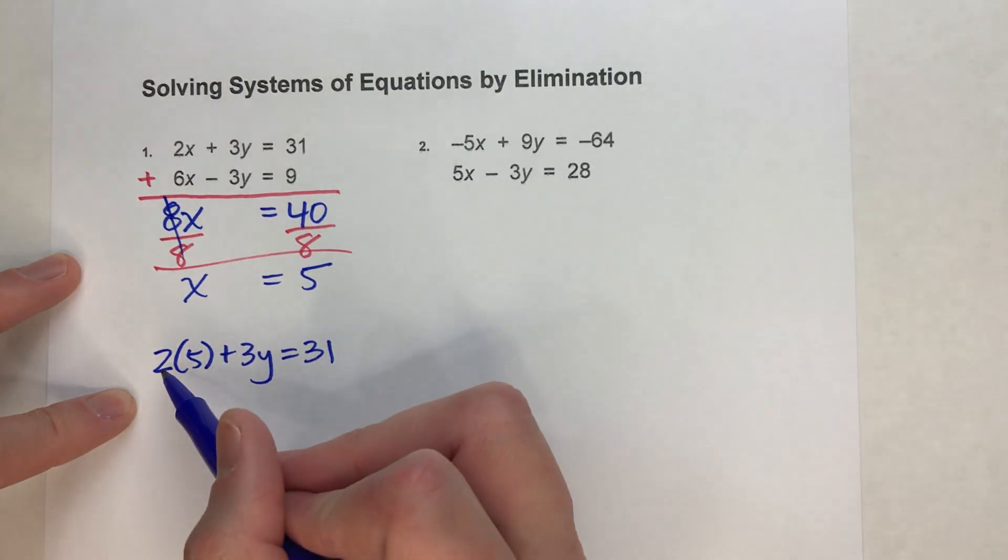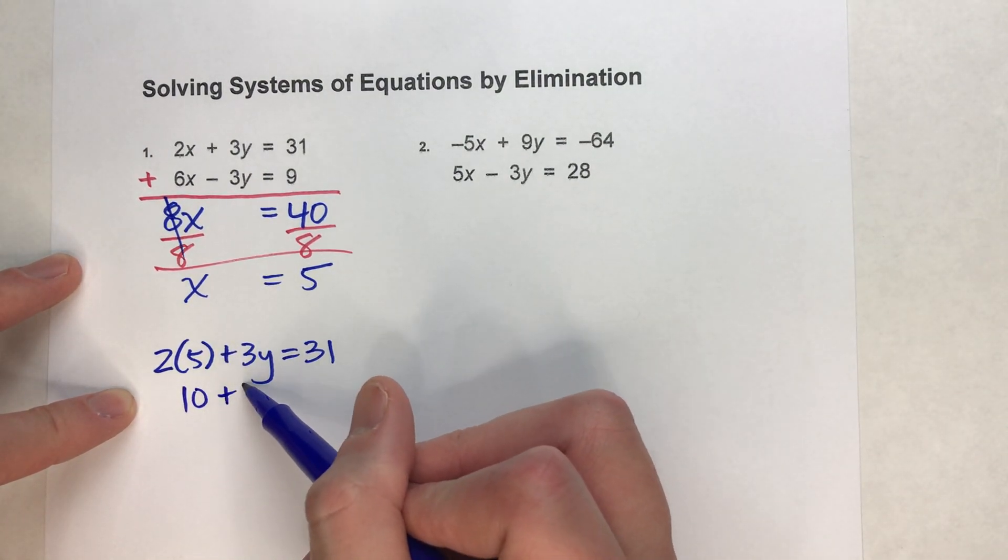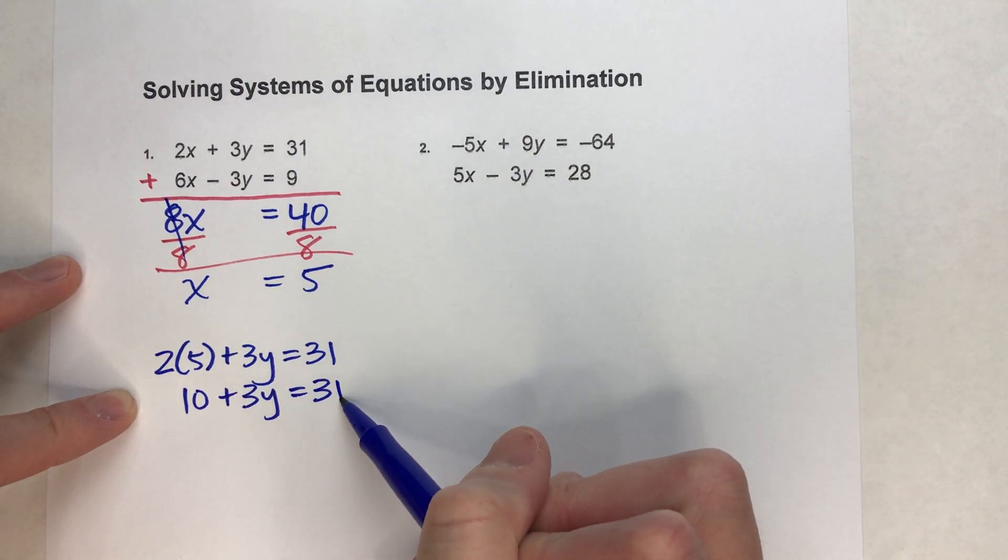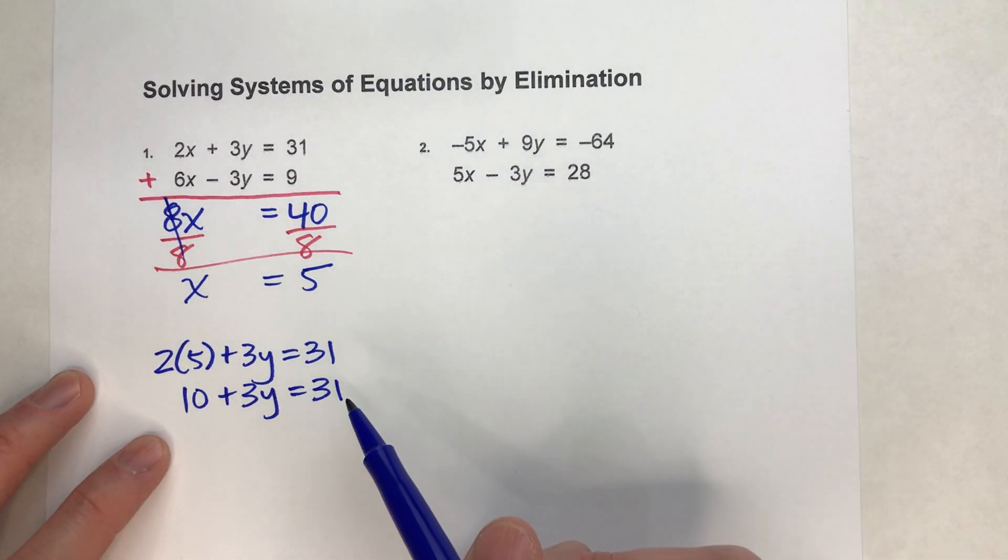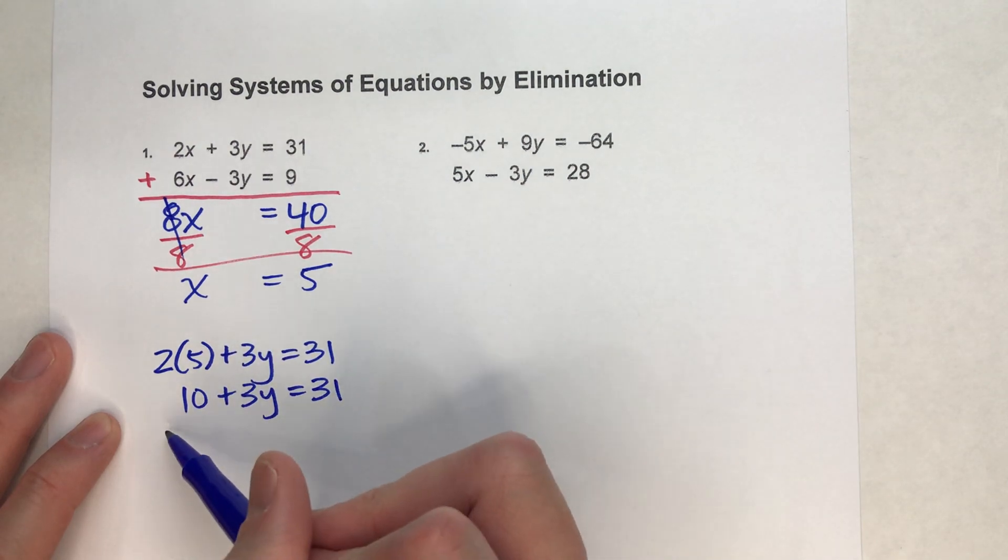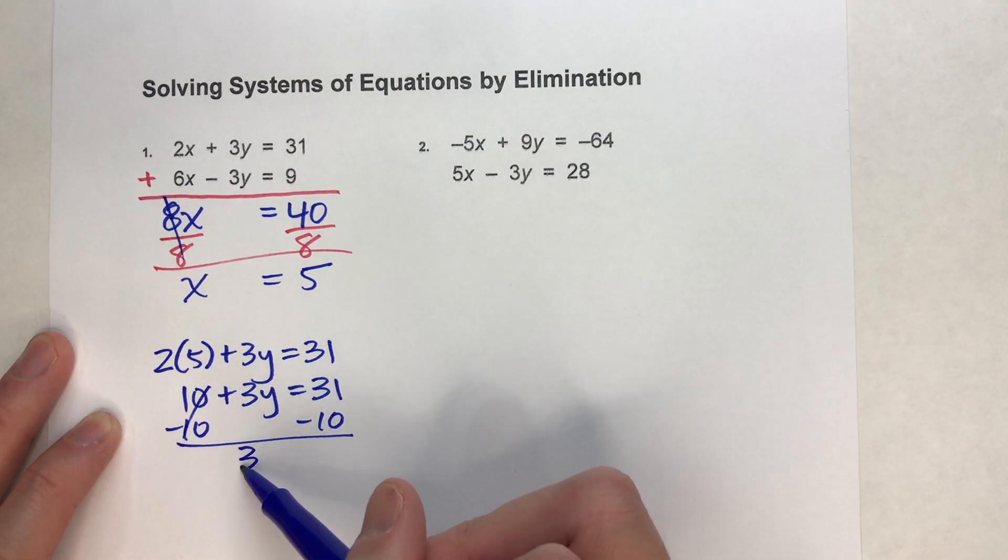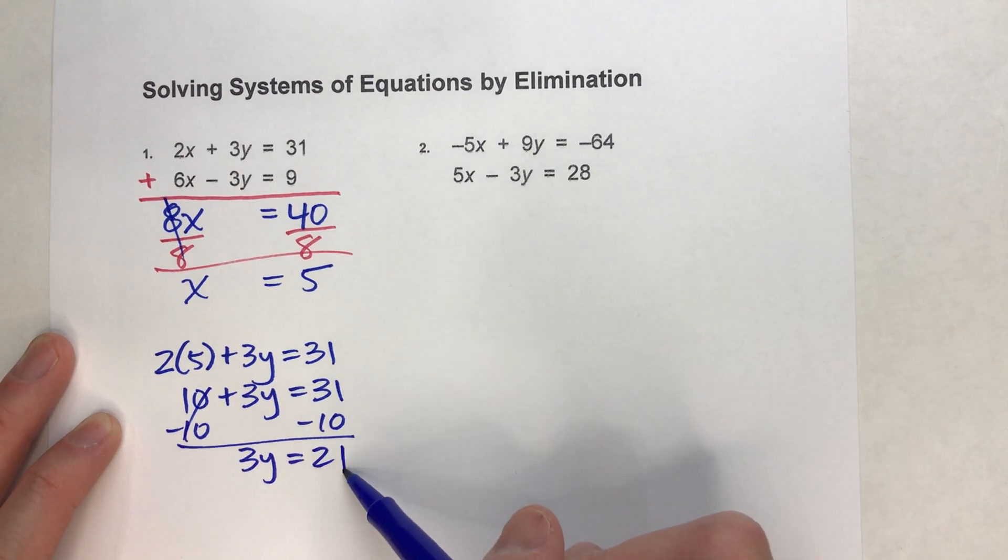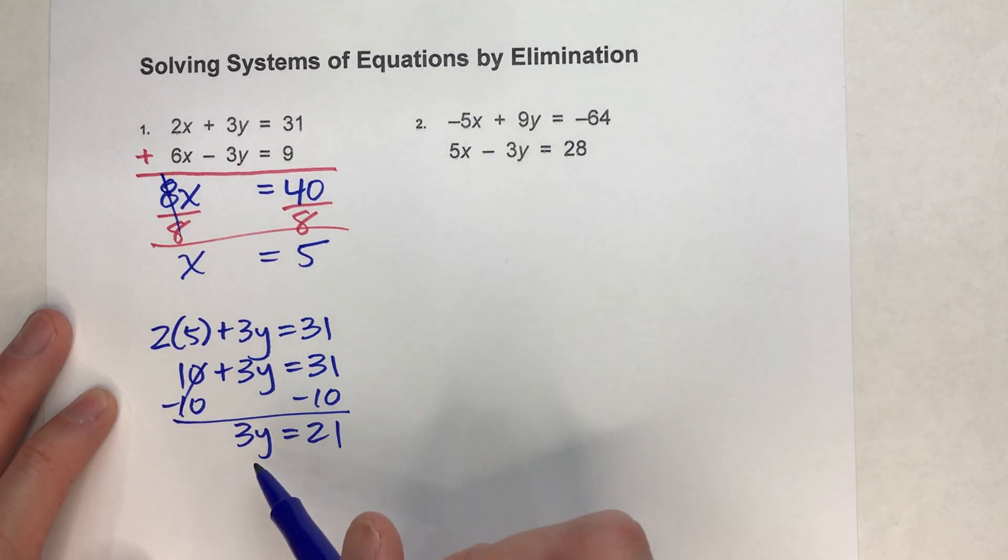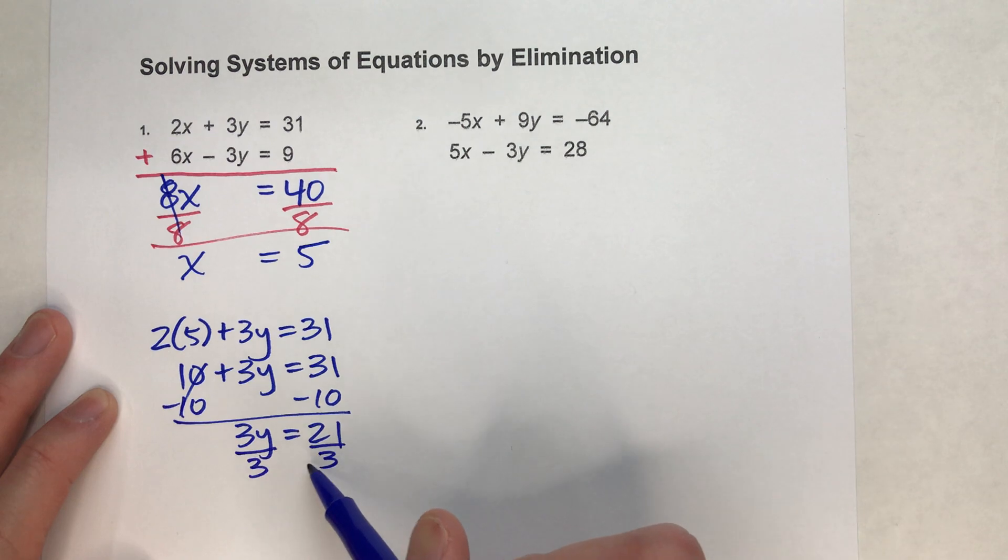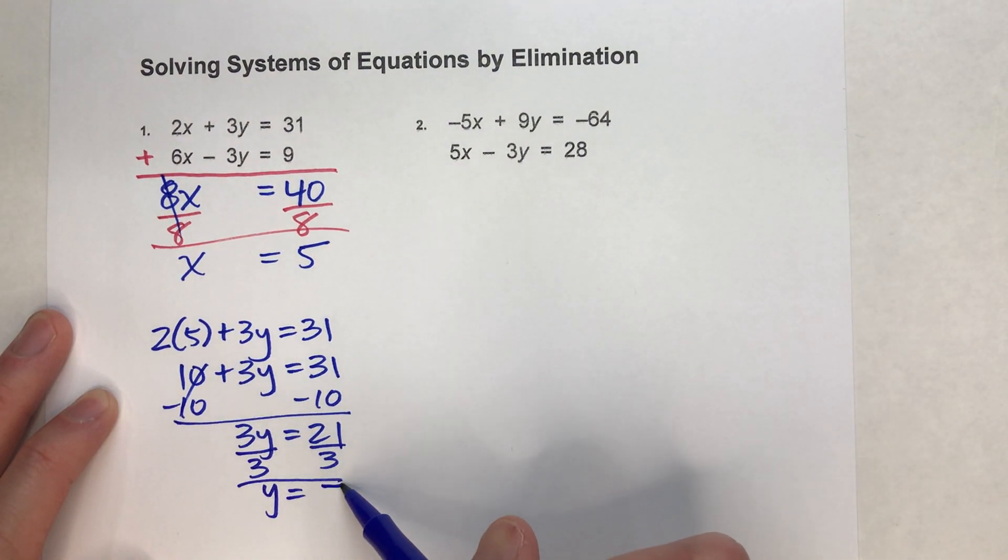It's going to take a little math to do this one, but 2 times 5 is 10. To get y, I have one more algebra equation to solve. I'm going to subtract 10 on both sides. I end up getting 3y equals 21, and then I'll divide by 3. I get y equals 7.